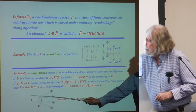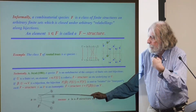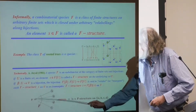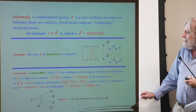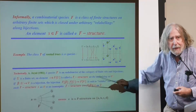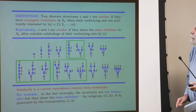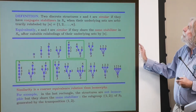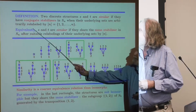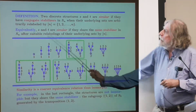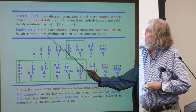This is a graphical representation of a general F-structure: you write the set, put the letter F to denote the class, and S equals this means this is a generic F-structure on elements A, B, C, D belonging to class F. If F is cycles, this denotes a cycle; if F is the species of all sets, this denotes a set. Now, two discrete structures are said to be similar if they have conjugate stabilizers in S_N when the underlying sets are arbitrarily relabeled by 1 to N. Equivalently, the stabilizers are conjugate if and only if they share the same stabilizers after suitable relabeling.